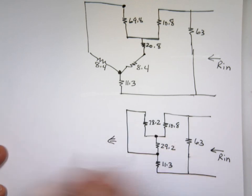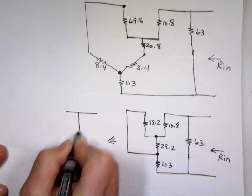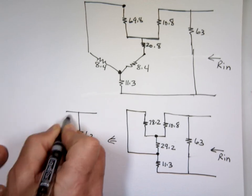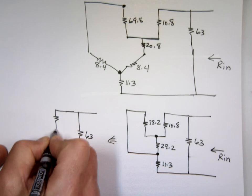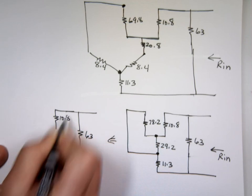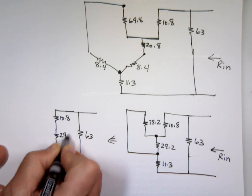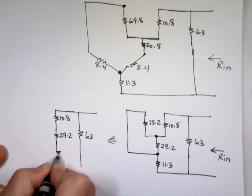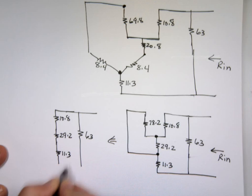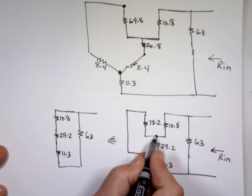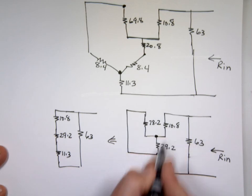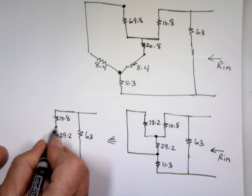Yes, absolutely. It looks like this. 10.8, 29.2, 11.3. And if you look at that resistor, the 78 is attached between this and this. That's right here and between this.